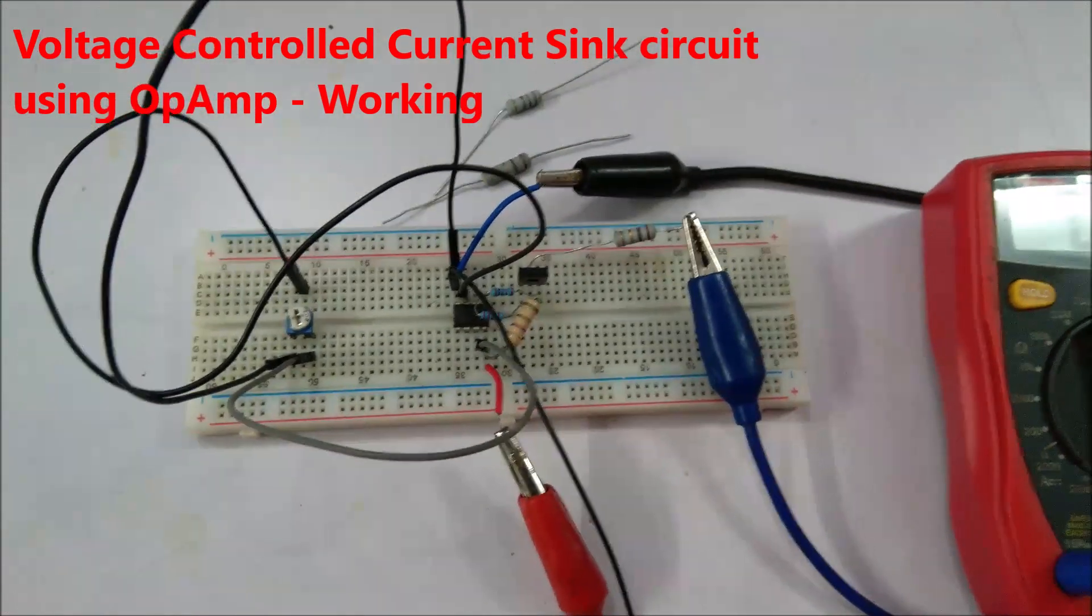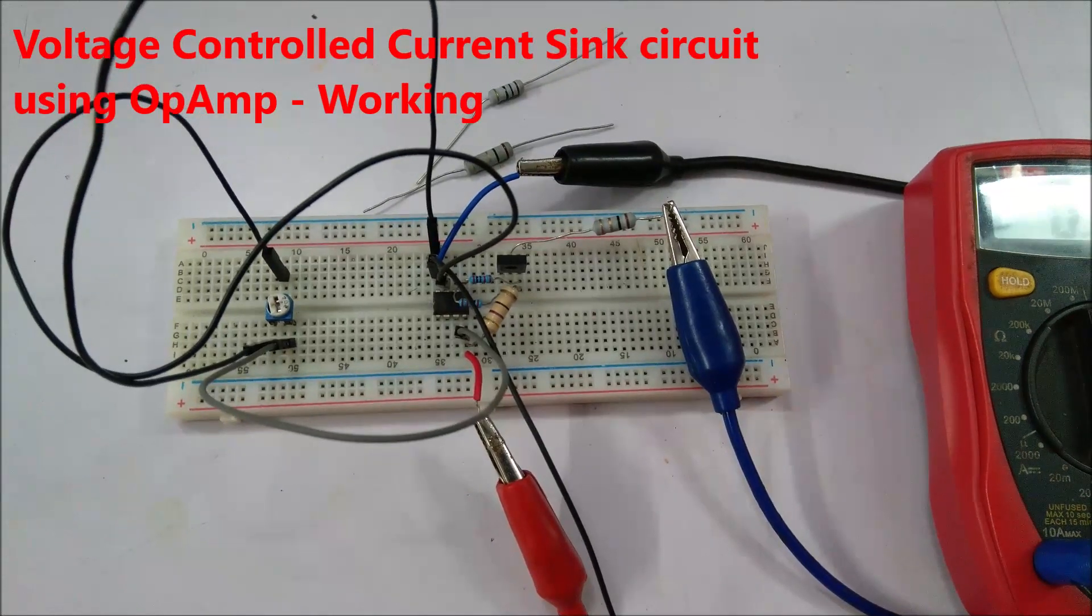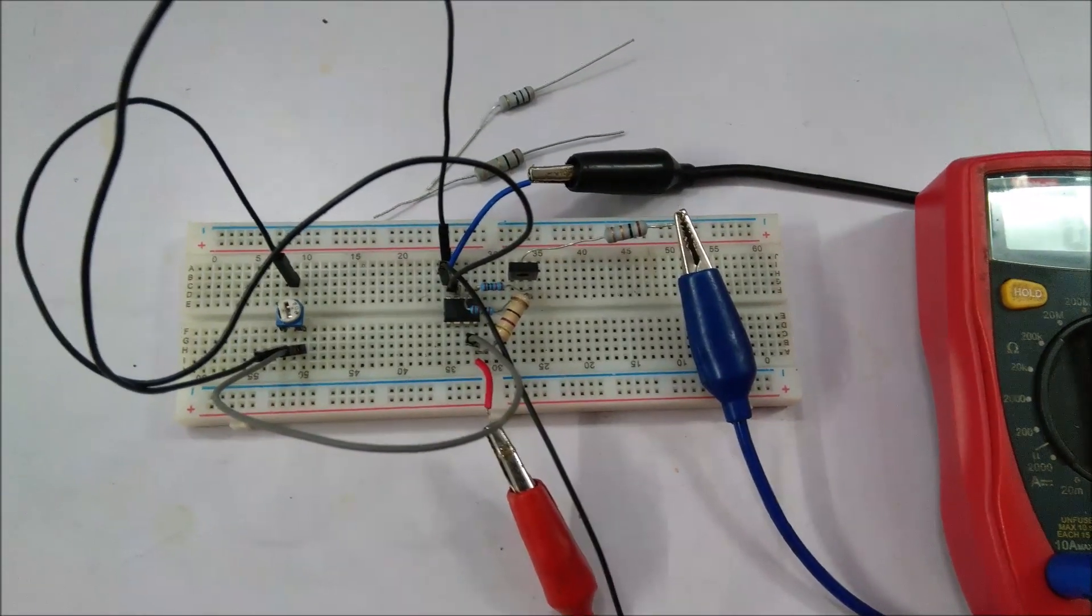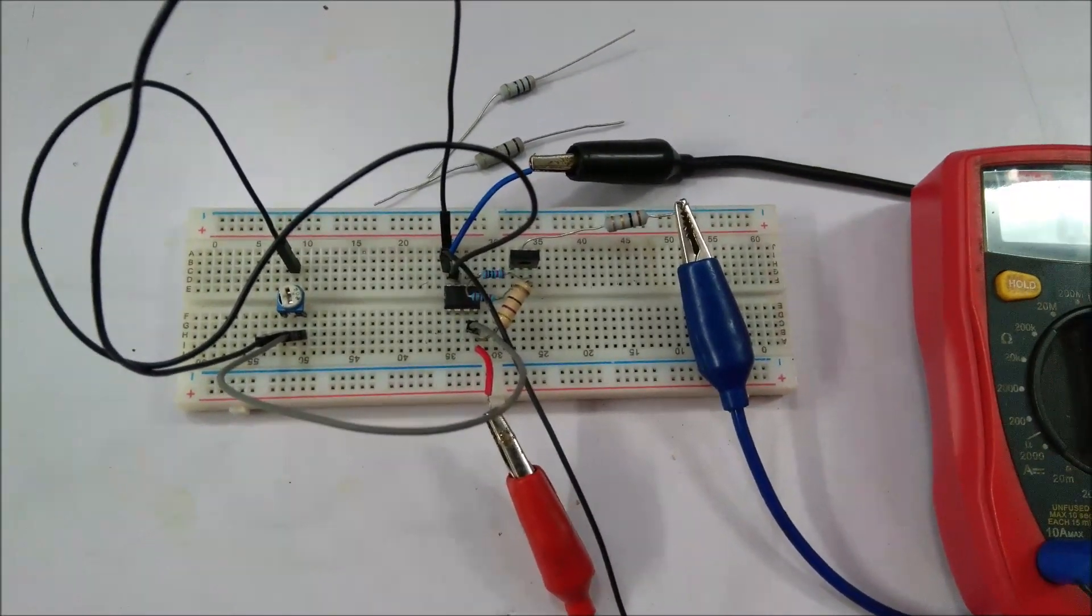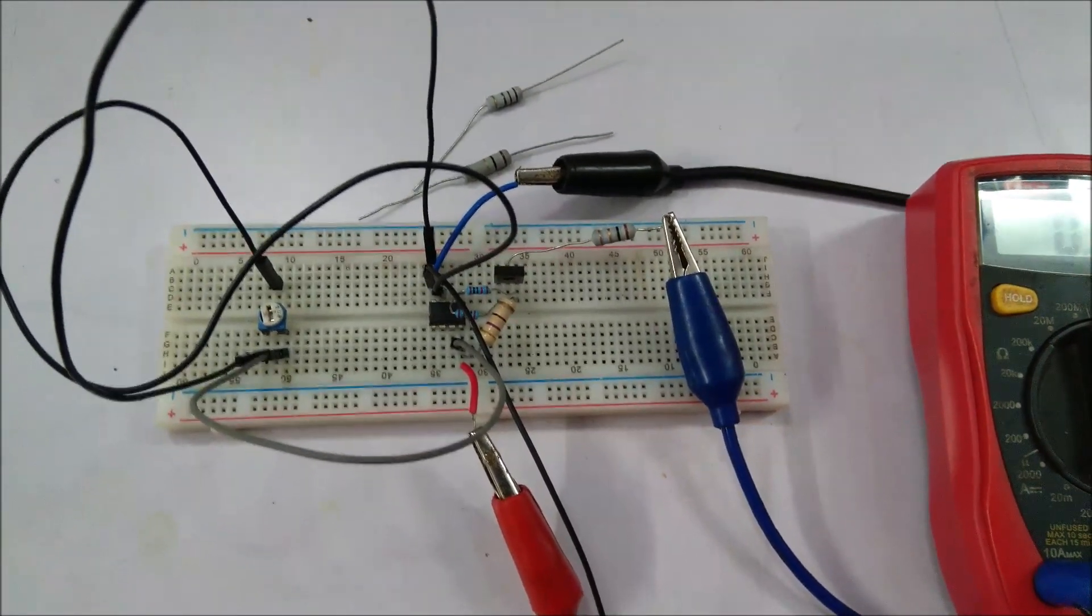Hello everyone, this is Saurav Gupta once again, and here is an interesting project of a constant current source circuit using operational amplifier which is controllable via voltage divider. So this is basically a voltage controlled constant current source circuit.